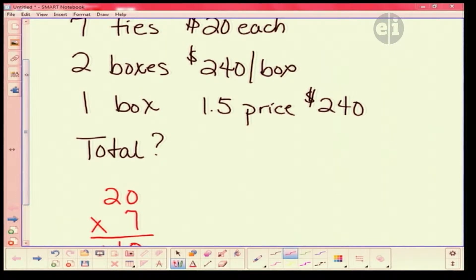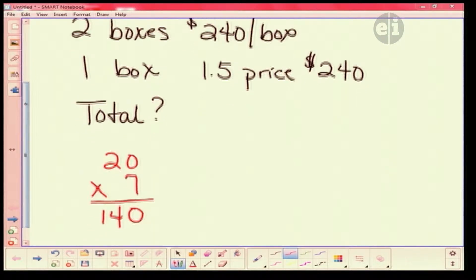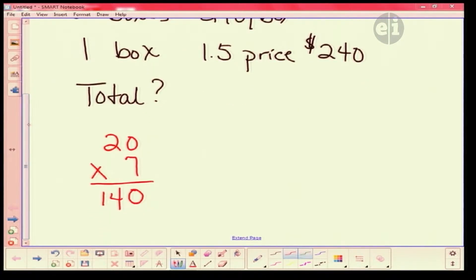Now we have two boxes at $240 a box. Let's do that. We're going to take the $240, and what are we going to do with it? You're going to multiply it. So what's $240 times two? Let's do it the long way. Two times zero? Zero. Two times four? Eight. And two times two? Four. So there we are so far.